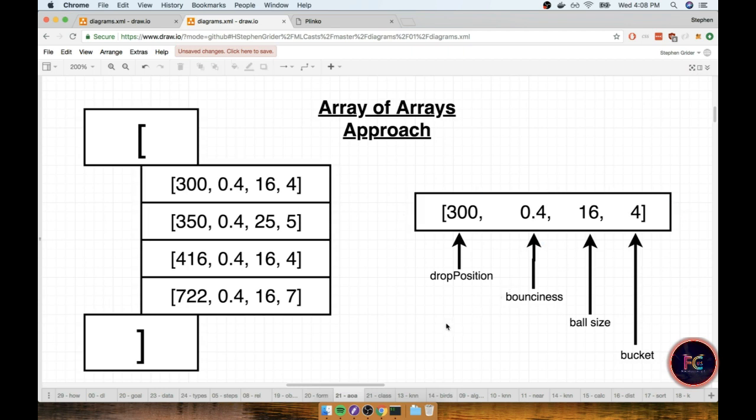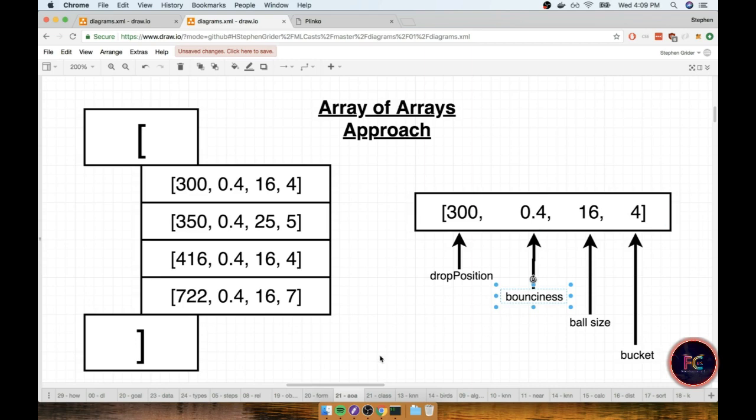In this approach we kind of have to keep it in our minds that the first index in each of these inner arrays is the drop position and the next one is bounciness, the next one is ball size, and the final one is bucket or which bucket the ball fell into. So we need to make sure that we stay very aware of what the individual indices inside of these inner arrays mean to us.